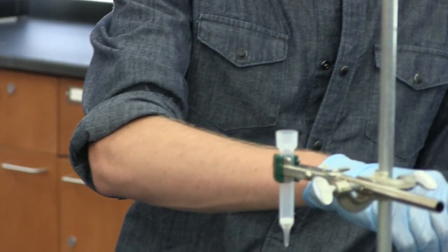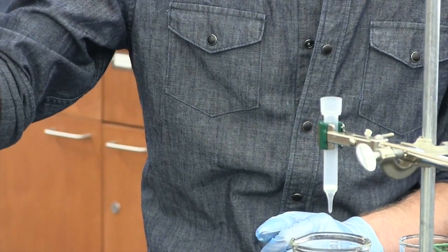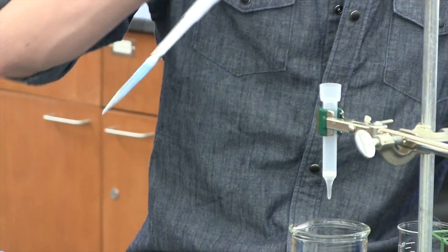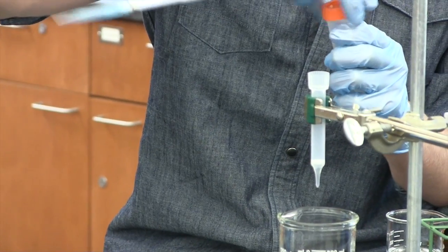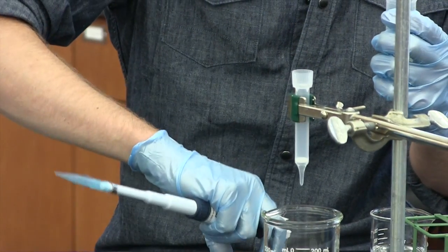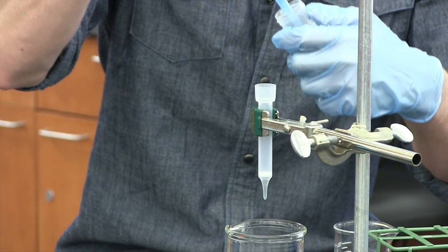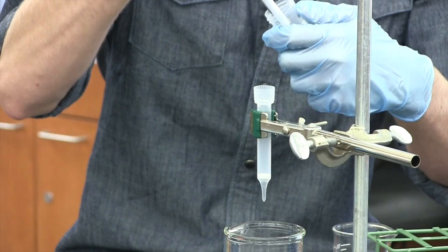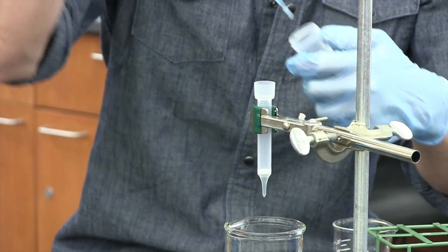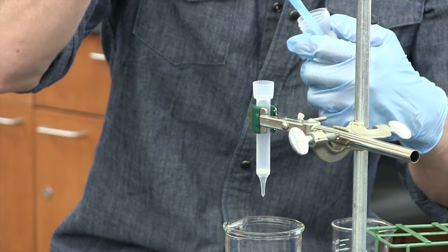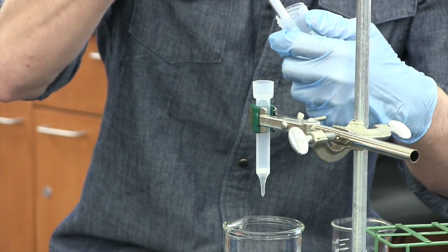You're going to put a mil of that into the column. I like to do it with the cap off, but if you do it that way, you want to make sure you add buffer immediately on top so that it doesn't get dried out. There you can see you got a nice glob of nickel resin, which is okay.